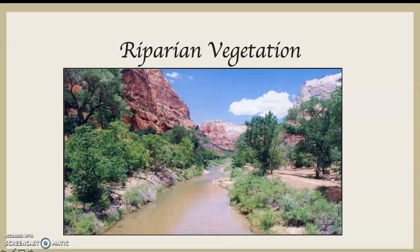We call that type of vegetation riparian vegetation. You can see here in Utah along the Virgin River in Zion Canyon, the vegetation tends to be somewhat vertical because of the water source that it has. Riparian vegetation grows along the banks of a river, but it doesn't grow in the river. If it gets in the river, it kind of drowns. But it's a type of vegetation that needs a lot of water.